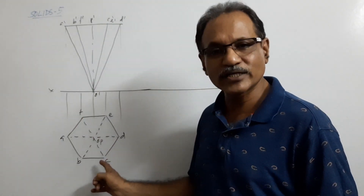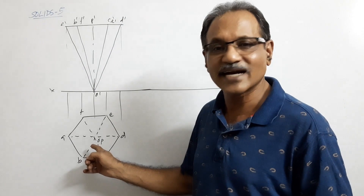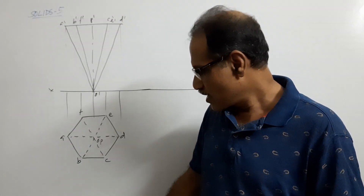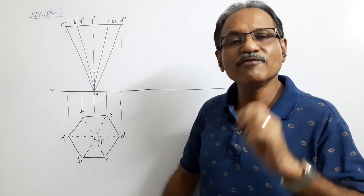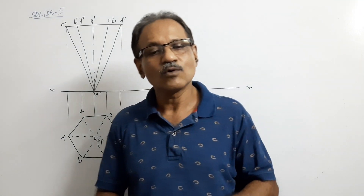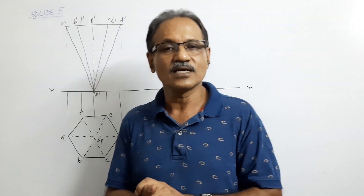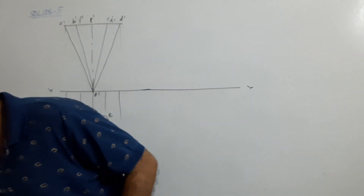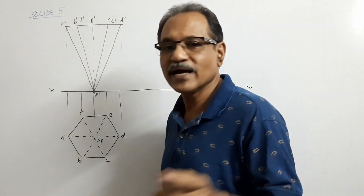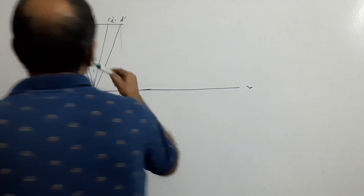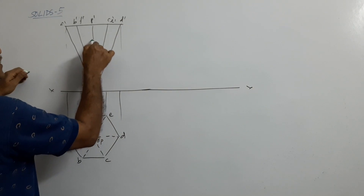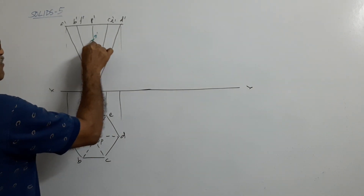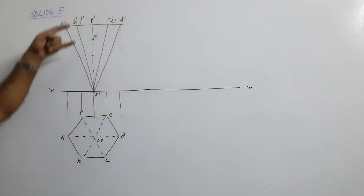Draw the plan first — that is why the slanted edges are shown dotted. Draw the plan, then the elevation. Now, where is the center of gravity of a pyramid? It is one fourth from the base along the axis. Here the axis is 60mm, so the center of gravity G dash is at 15mm from the base.